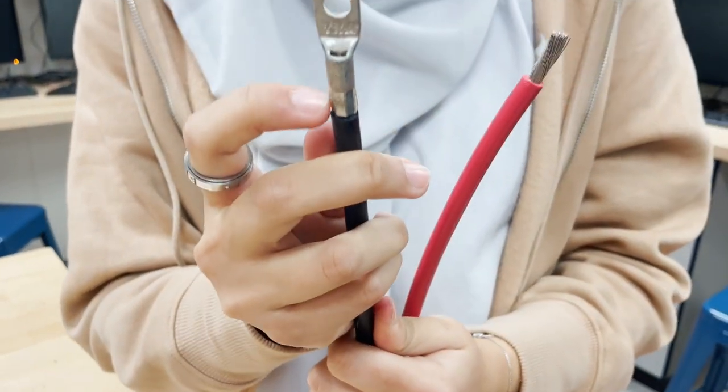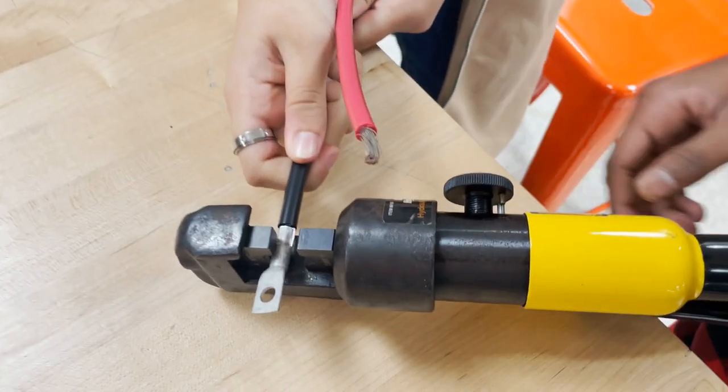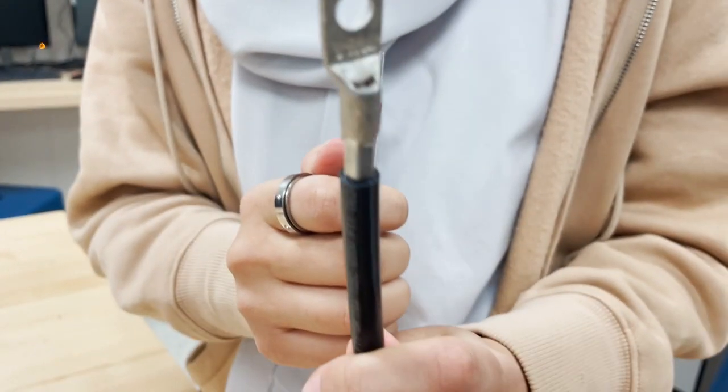Now the next step is to get rid of these flaps. So we're going to crimp again at a 60 degree angle to get rid of the flaps. This is what your crimp should look like at the end of your first crimp.